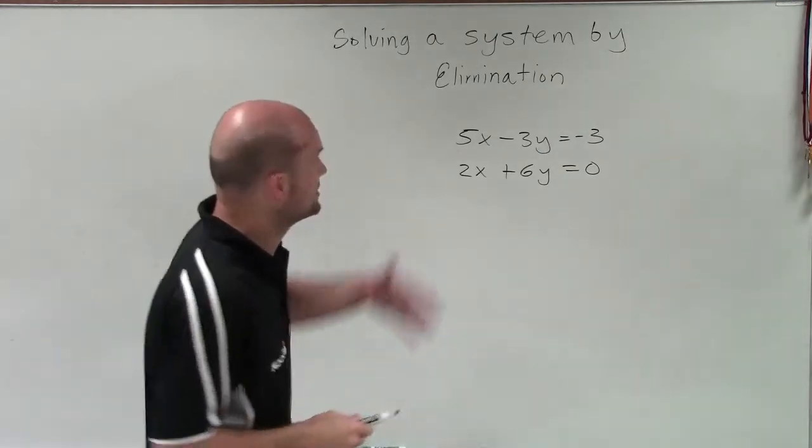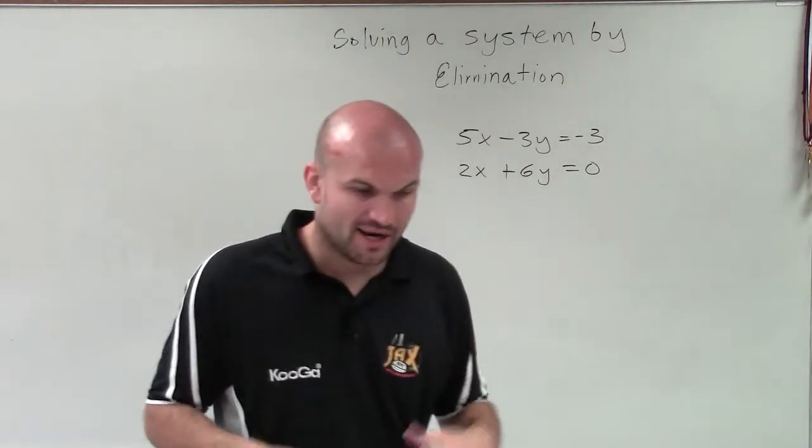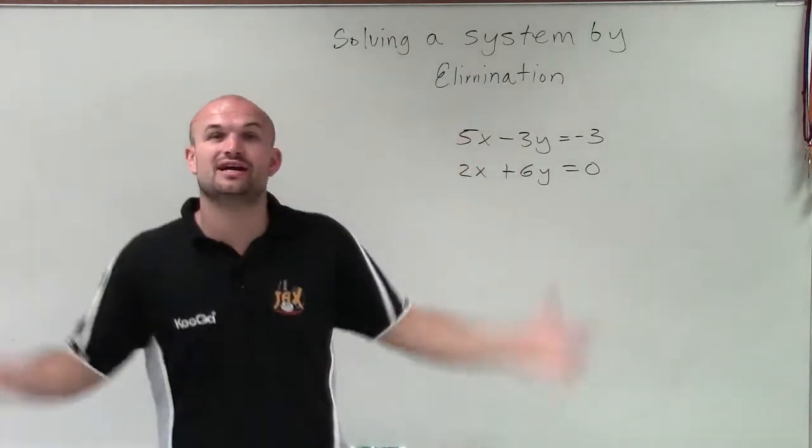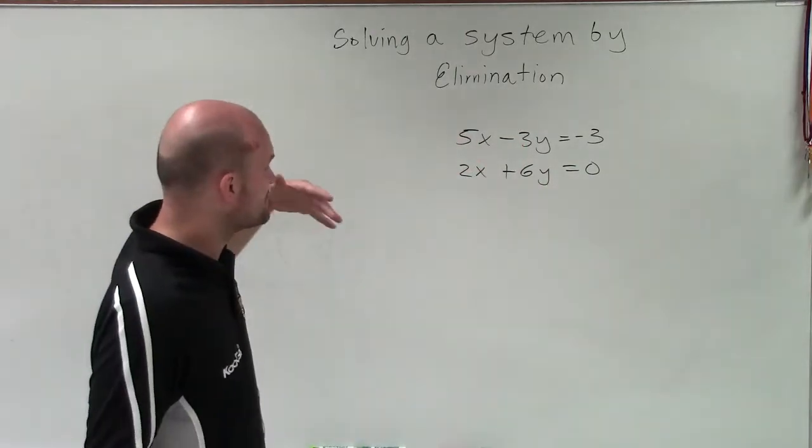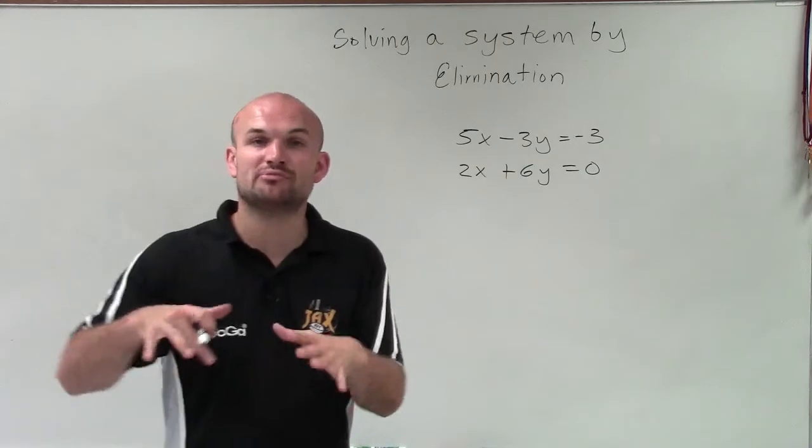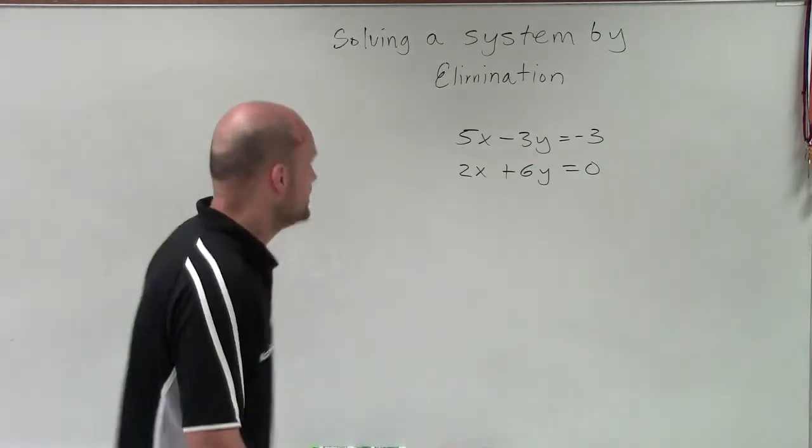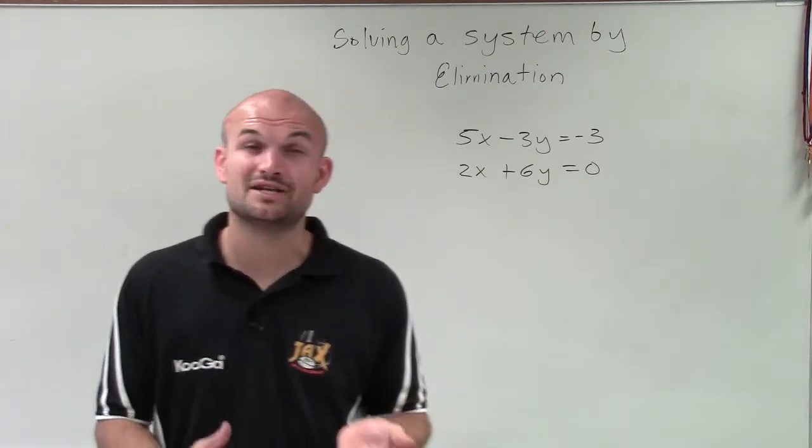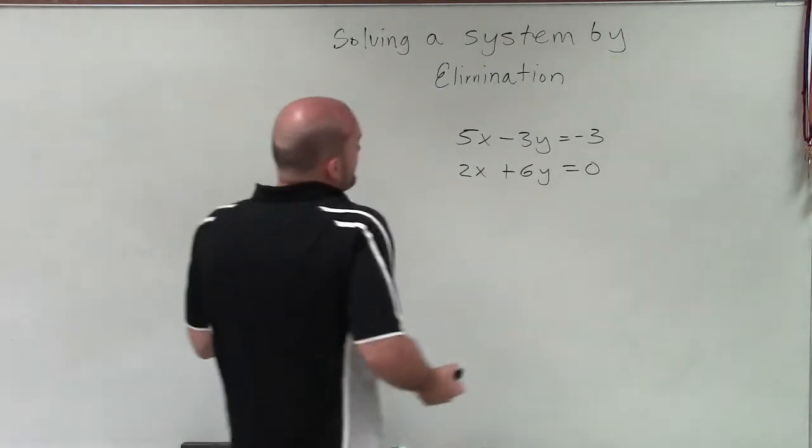OK, so now we're going to go into another elimination problem where, again, we see that our coefficients for our two variables, none of them are the same. And so what we're going to do is, again, have to multiply by a multiplier. Now, usually you like to multiply by a multiplier. What we want to do is multiply by an integer and look at a coefficient that we want to determine.